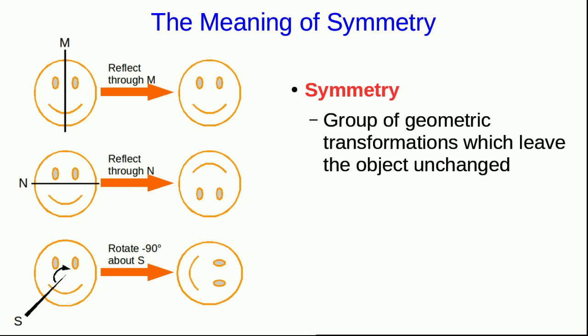We talk more formally about these symmetries in terms of reflections and rotations. So we can reflect the happy face through a mirror line M, and it will be symmetric under that transformation, but it is not symmetric under a reflection through this other mirror line N, or symmetric under rotations about this axis S, which is perpendicular to the screen. So these are examples of two possible geometric transformations that we can talk about as symmetries of an object, reflection and rotation.